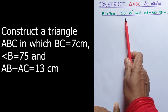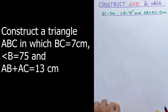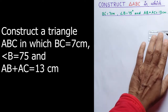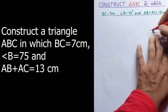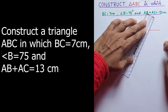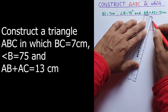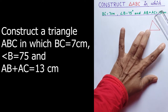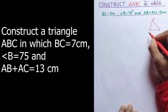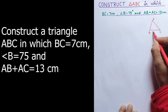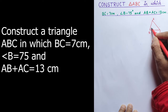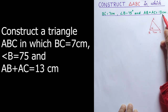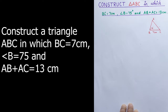That means one base length is given, one base angle is given, and the sum of the other two sides is also given. First let us draw a rough figure. The name of this triangle is ABC. The base length is 7 centimeter, angle B is 75 degree, and AB plus AC is 13 centimeter.